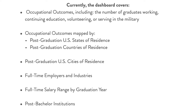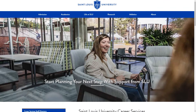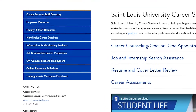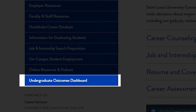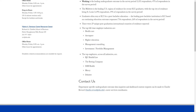Currently, the dashboard covers occupational outcomes, occupational outcomes mapped by post-graduation US state of residence and country of residence, post-graduation US cities of residence, full-time employers and industries, full-time salary range by graduation year, and post-bachelor institutions. The dashboard is available on all major device formats. The Undergraduate Outcomes Dashboard is accessible from the sidebar navigation of the SLU Career Services website under the section name Undergraduate Outcomes Dashboard. Opening this section will display a description of the dashboard and key undergraduate outcomes metrics.